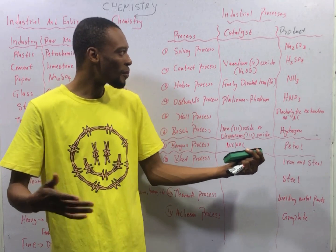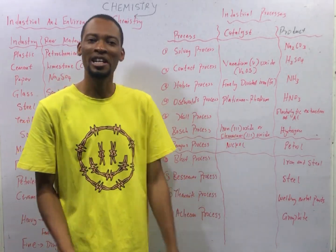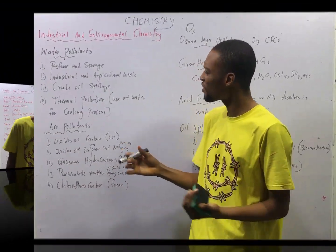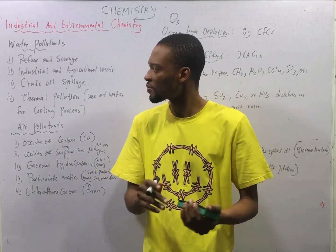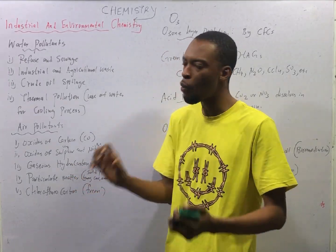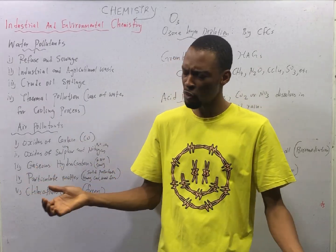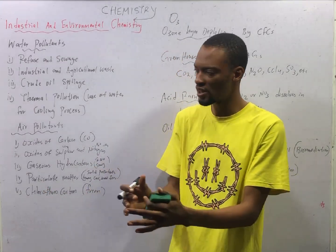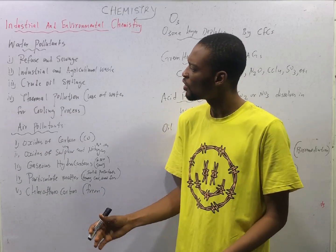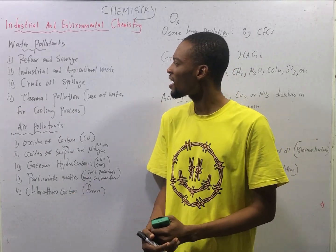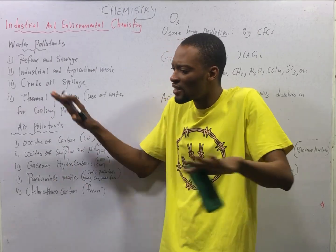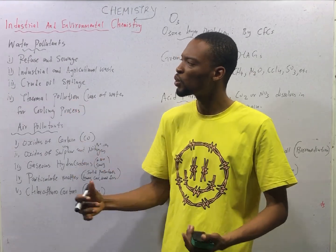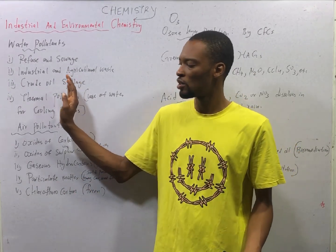Let's look at pollution and things you should know under environmental chemistry. Here is an overview of environmental chemistry. Water pollutants are unwanted substances in water that pollute it. Examples include: refuse and sewage (dumping rubbish into water or sea), industrial and agricultural waste, crude oil spillage into water, and thermal pollution — that is, the use of water for cooling processes. All these are water pollutants.